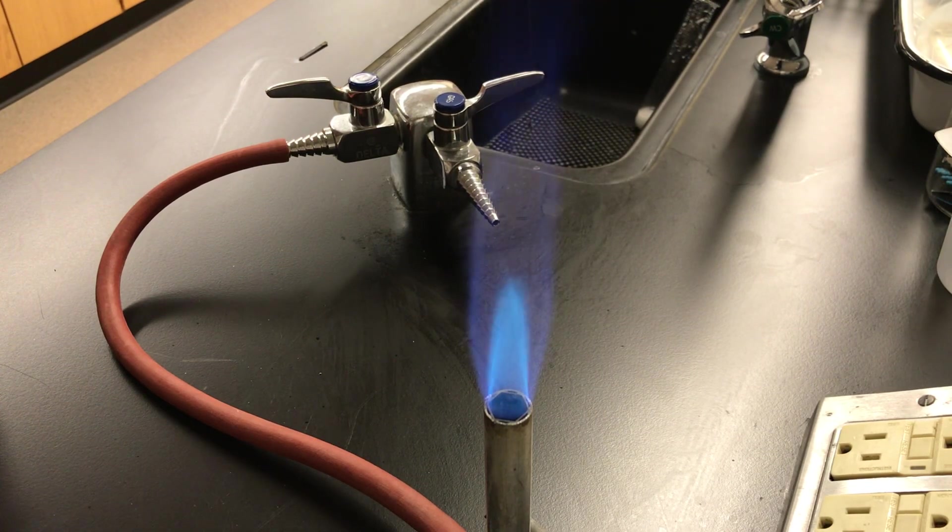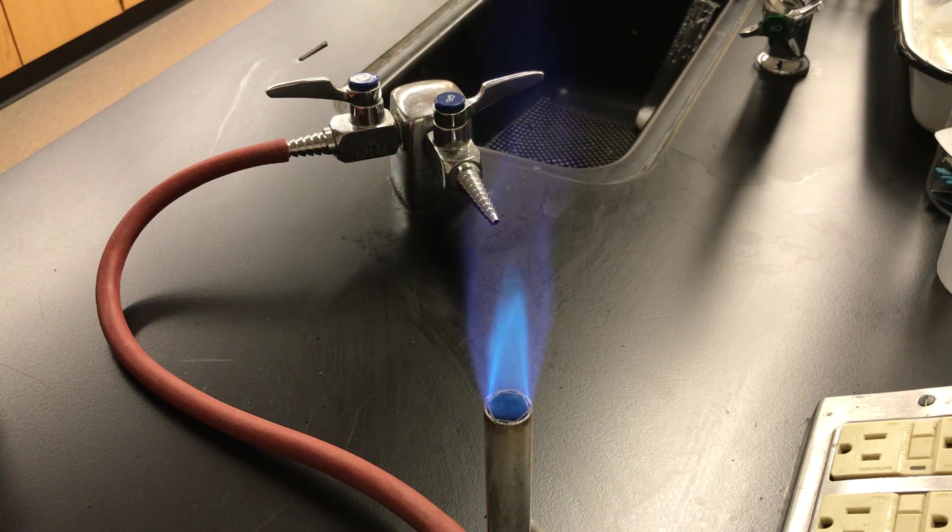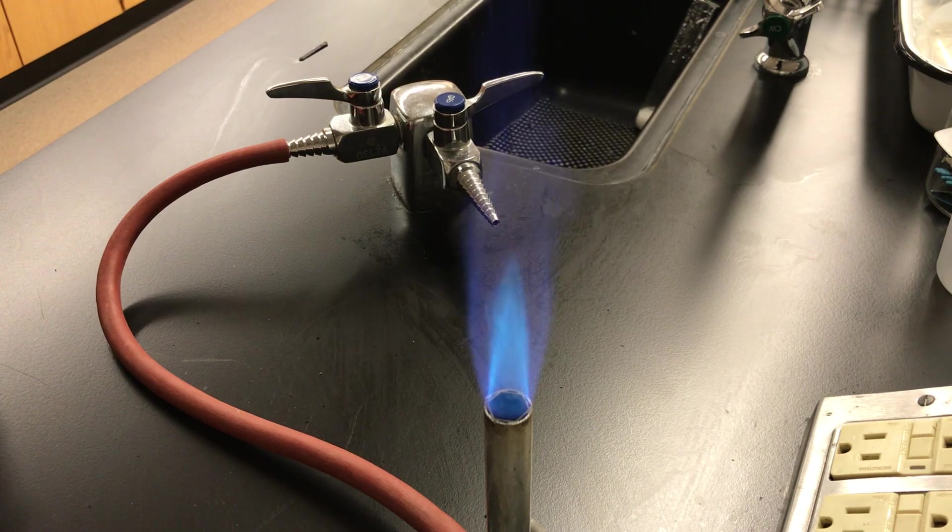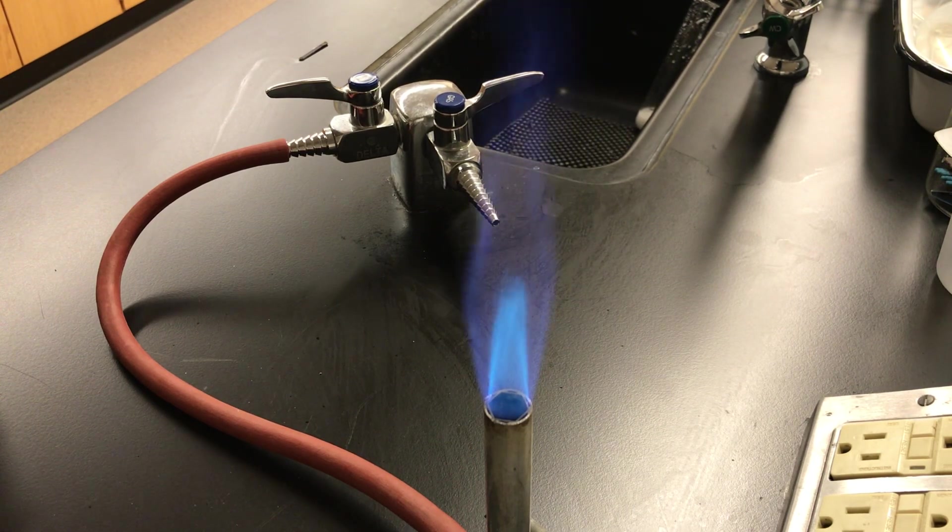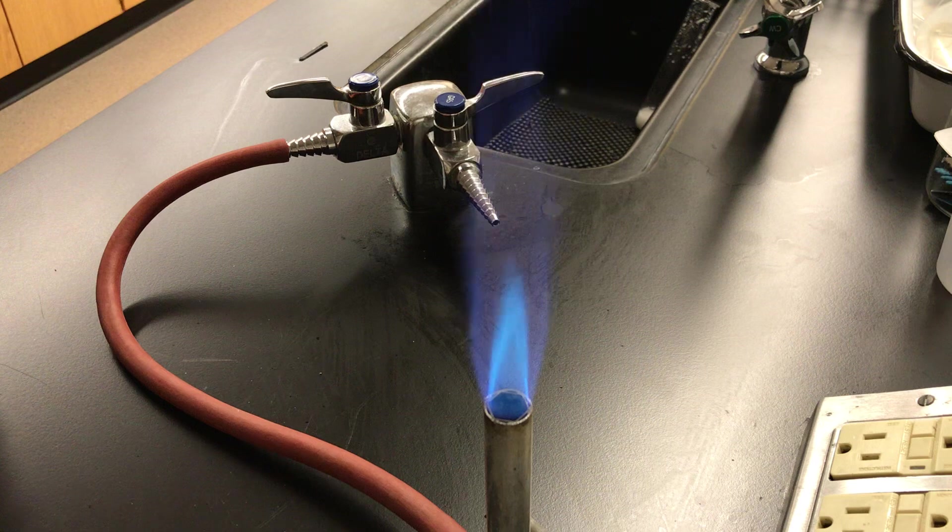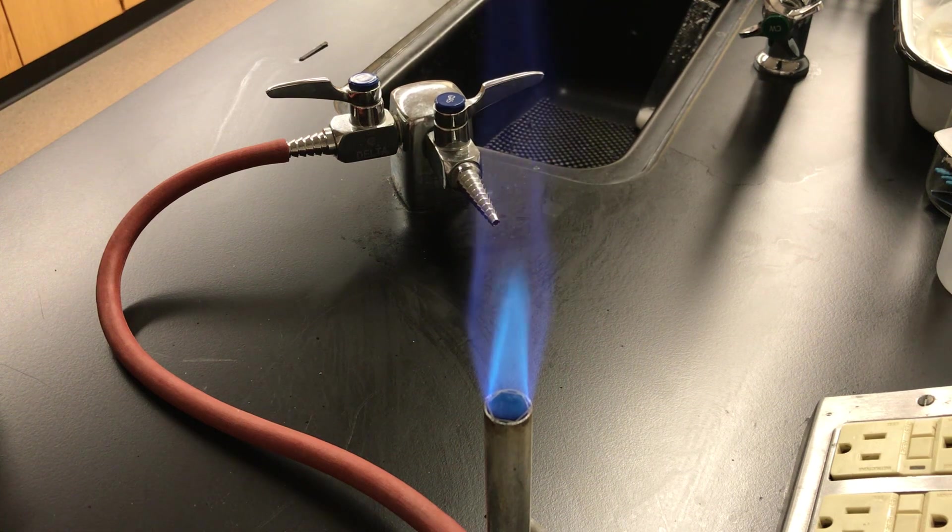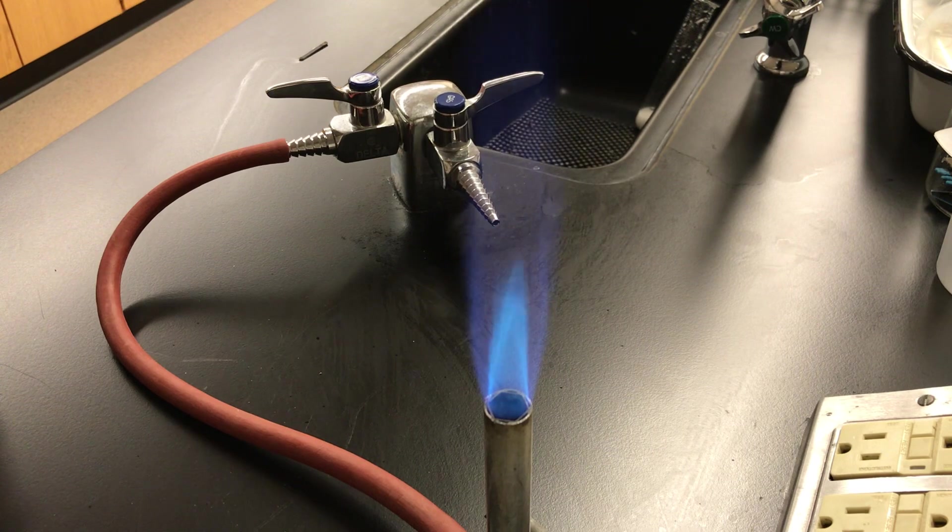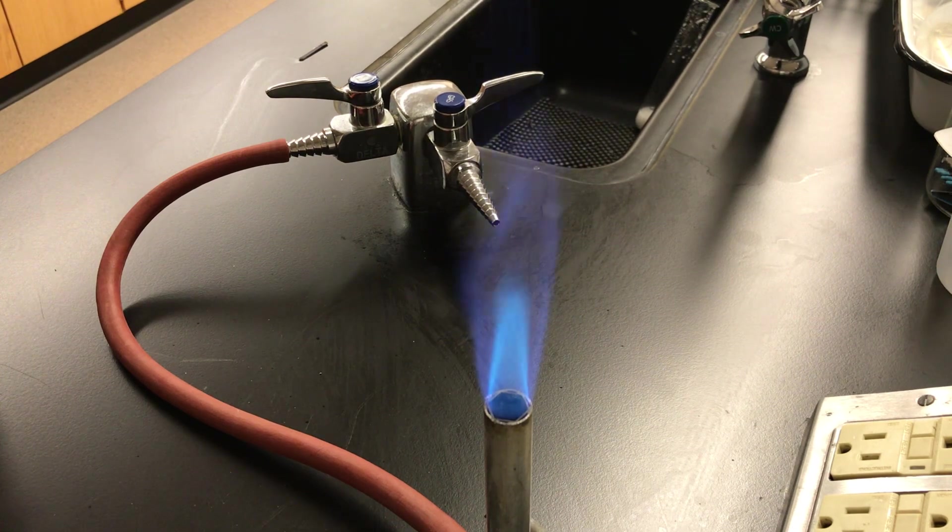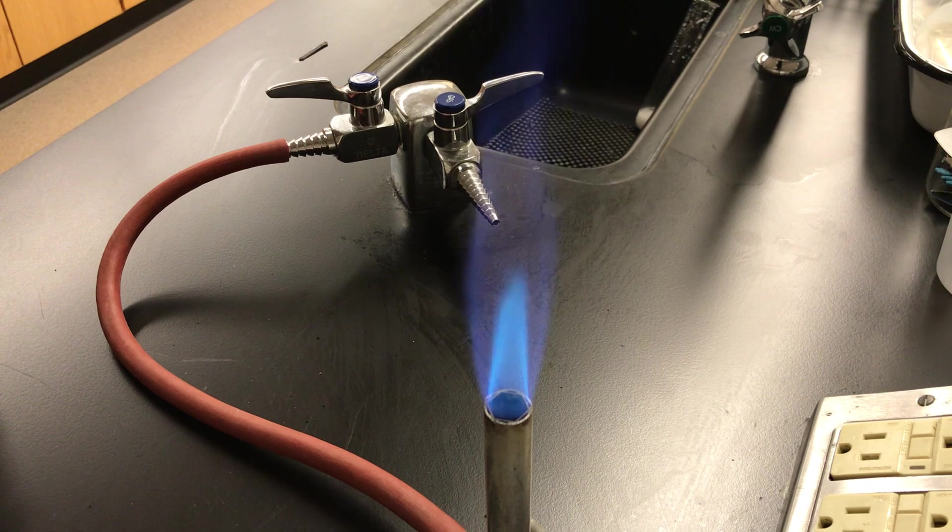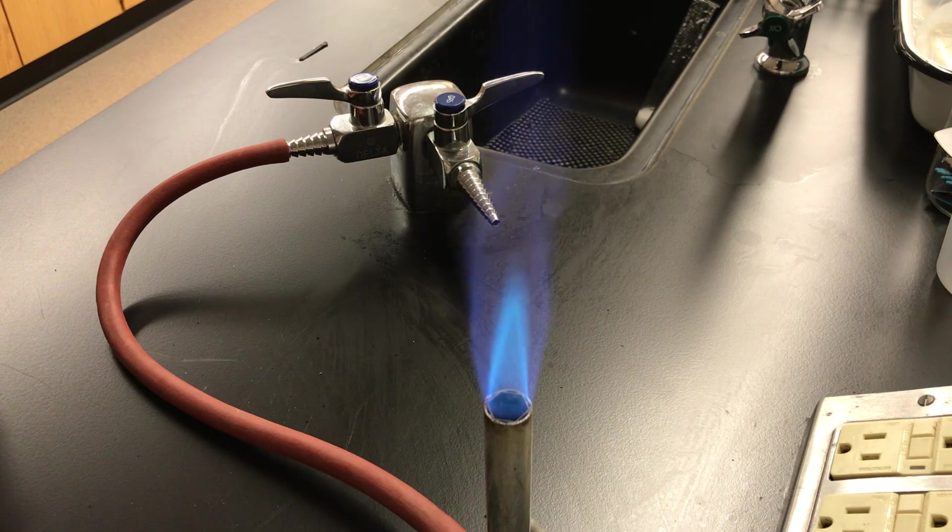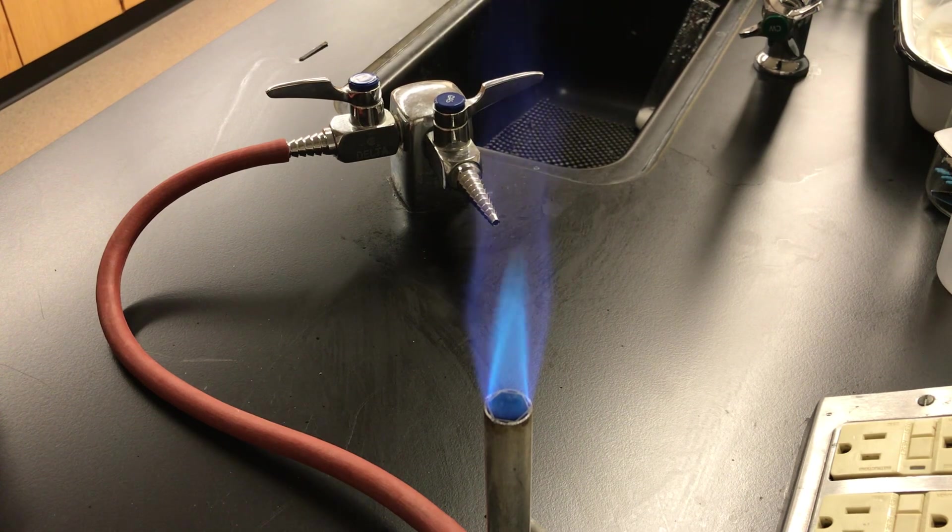One very common application of these flame tests would be fireworks. The colors that you see in fireworks are the result of adding small amounts of different salts to produce the desired effects that you see in the exploding fireworks. Some people also have fireplaces where they buy pre-treated firewood or you can even get little packages of salts that you can put onto your firewood and it would produce different colors. Personally, I like to see a fire that looks like a fire, but for some people, that's kind of cool.